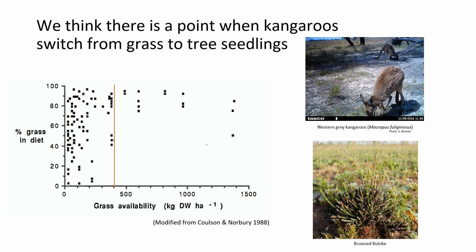Some work done several decades ago looked at the diet of kangaroos and the proportion of grass relative to how much was available to them. They found that below about 400 kilos per hectare — which is not very much — kangaroos start to forage on other things, such as shrubs or tree seedlings. It's at this point that there is a risk of browsing, as has happened to this poor little bull oak seedling, which is never going to be a proper tree.